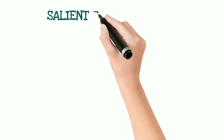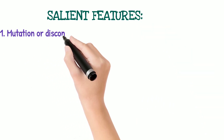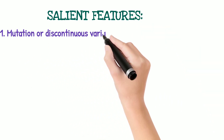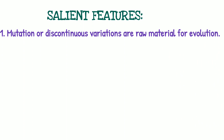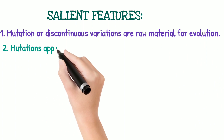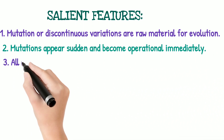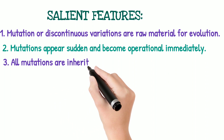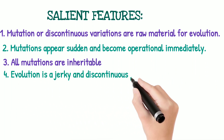After this experiment, he gives the following features. First, mutations or discontinuous variations are the raw material for evolution — for example, the number of toes in all bird species ranges from 2 to 5. Second, mutations appear suddenly and become operational immediately. Third, all mutations are inheritable. Fourth, evolution is a jerky and discontinuous process.